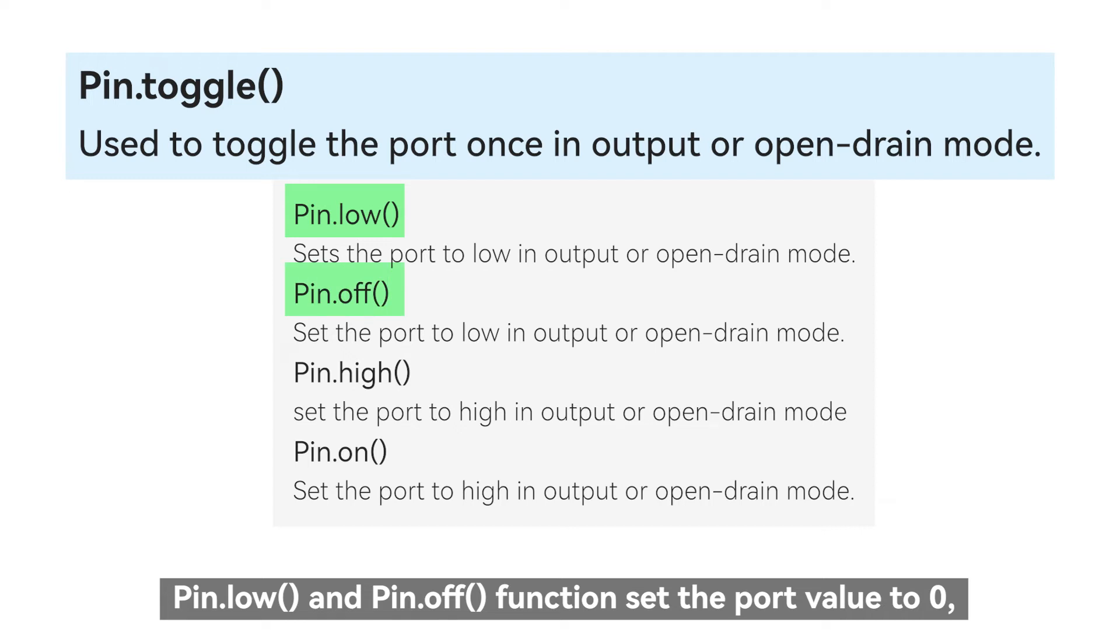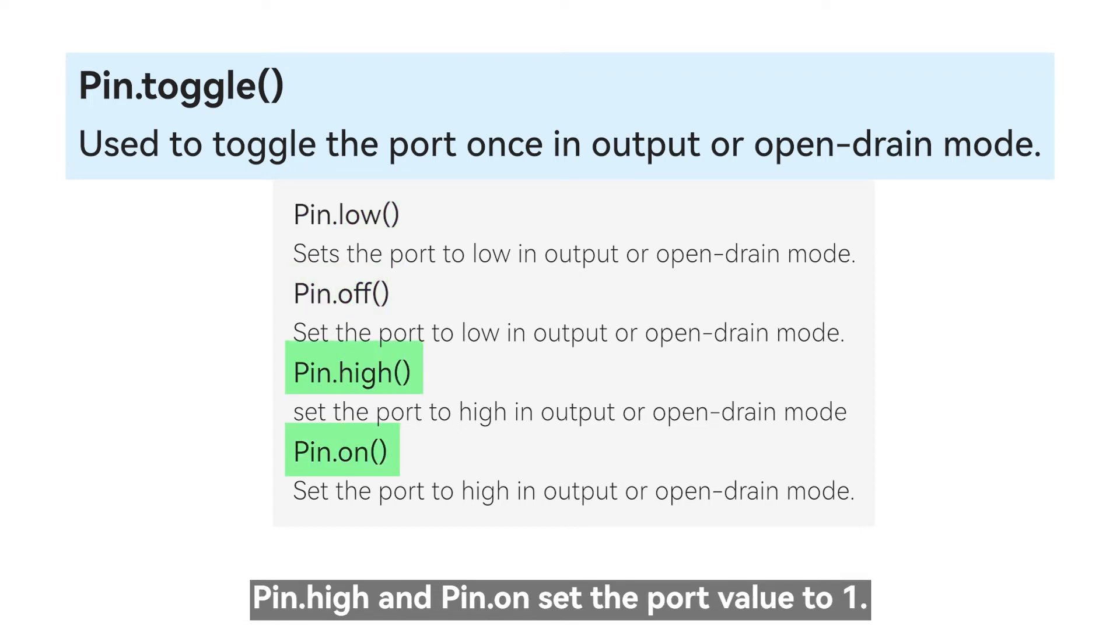The above four functions are all used in output mode or open drain mode: pin.low and pin.off function set the port value to 0, pin.high and pin.on set the port value to 1.